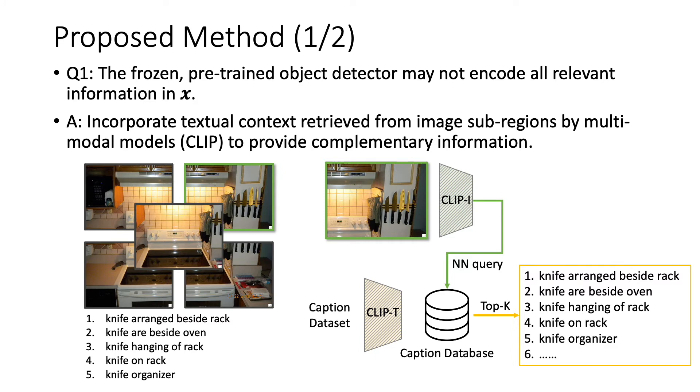To address the first issue, in the last figure, we propose to incorporate textual context retrieved from each sub-region by a multi-modal CLIP model to provide complementary information. Specifically, we first construct the caption database by encoding the captions from some caption dataset, such as Microsoft COCO or Visual Genome, by using the text branch of the CLIP model. We then query the caption database with the image sub-region encoded by the image branch of the CLIP model, and then get the top-k most relevant text descriptions of the query image.